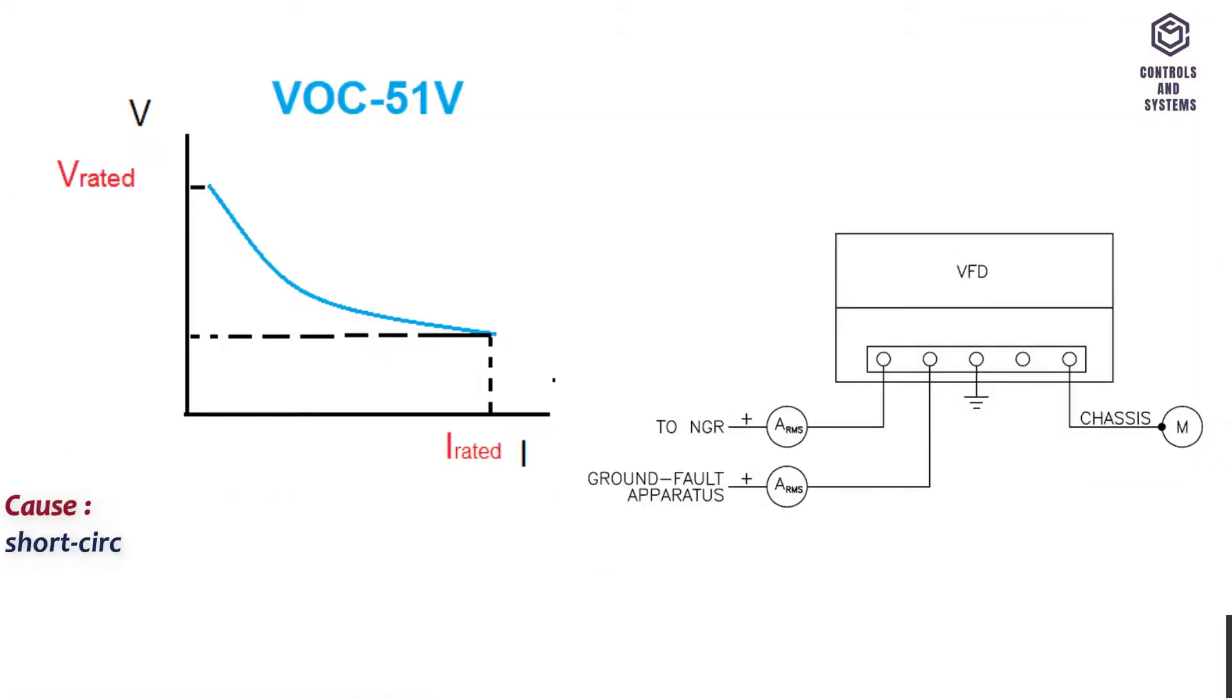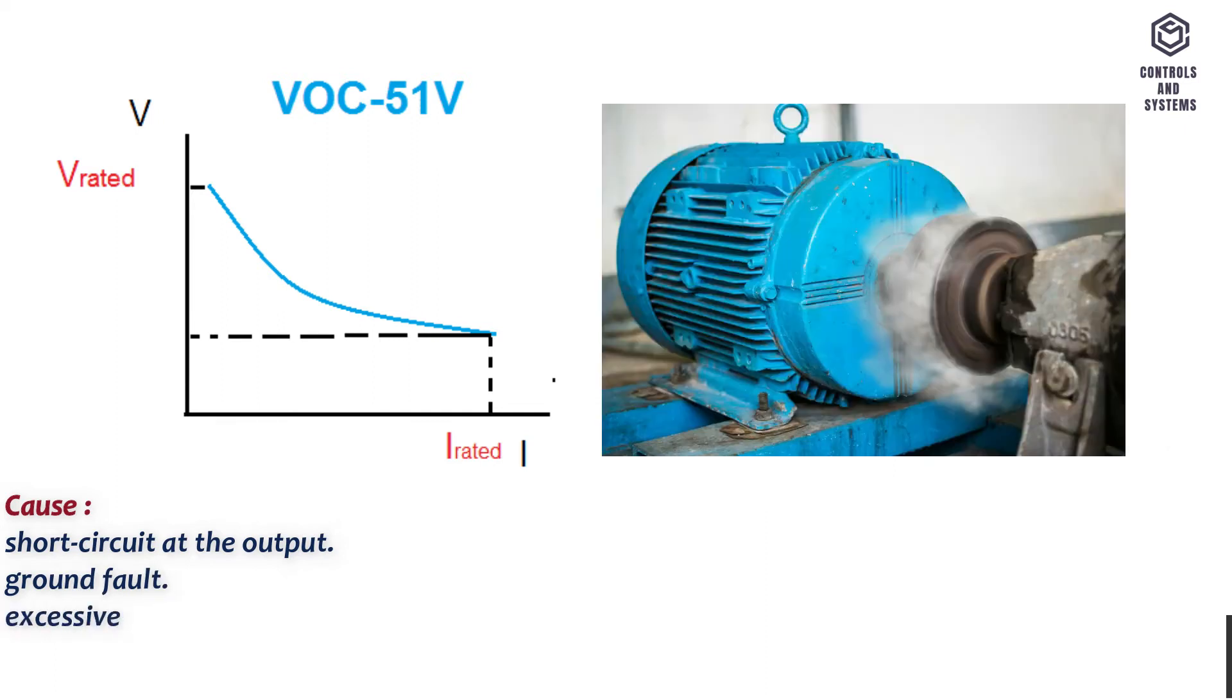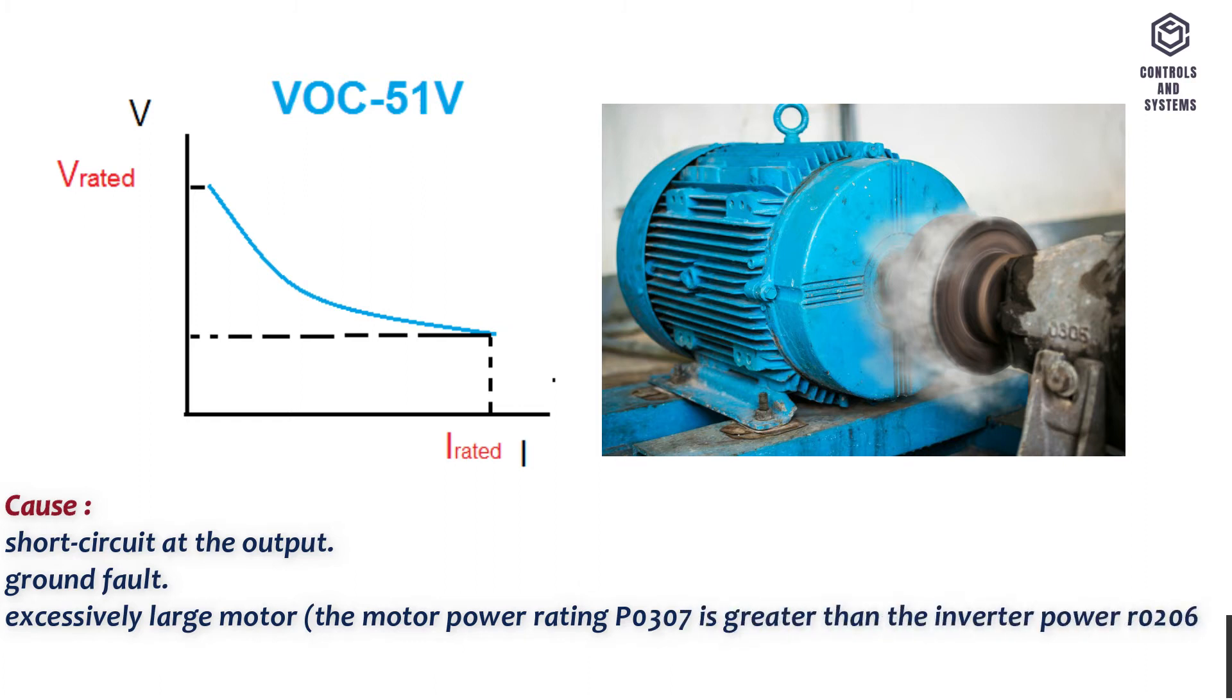Cause: Short circuit at the output. Ground fault. Excessively large motor, the motor power rating P0307 is greater than the inverter power R0206. Defective final stage or end stage.